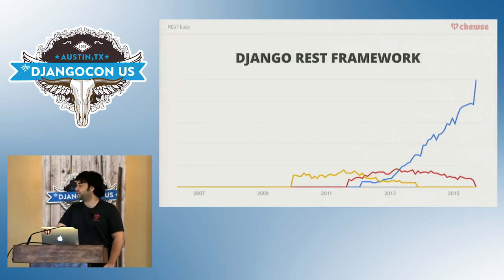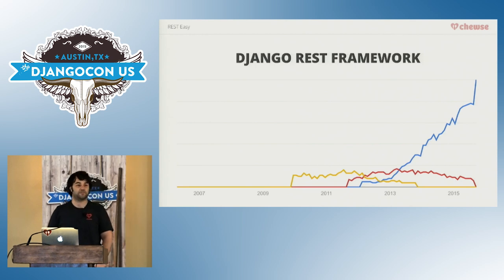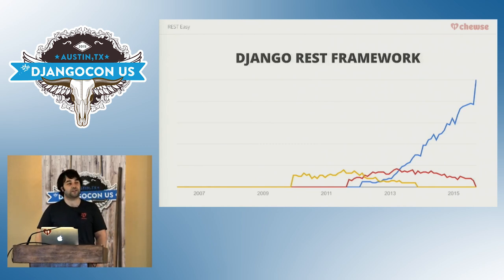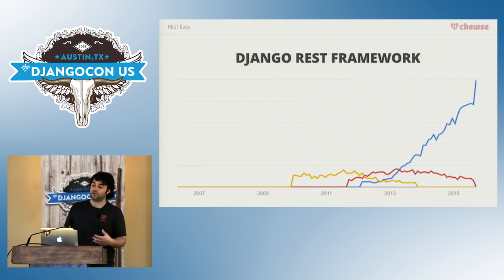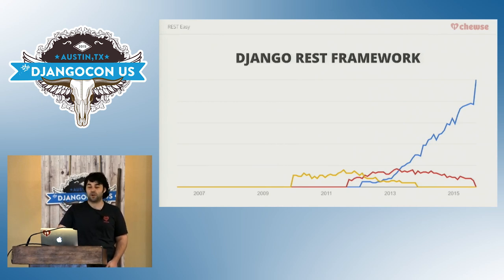Let's talk about the state of REST today. This is just Google Trends — take it for what it is — but the blue line is Django REST framework; the other two lines are Piston and TastyPie. Django REST framework seems to be the clear winner of this group, and it's really only happened in the last couple of years. There's a huge community around it now and a lot of tooling, which is great. The other thing to note is just the magnitude — all three combined have really exploded in the last year or two. To me, this says this stuff is pretty important and growing in importance.